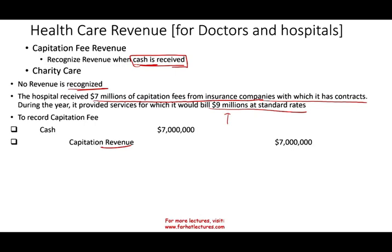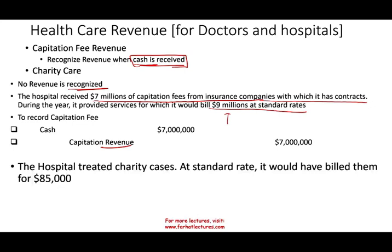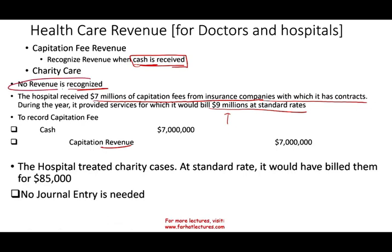The hospital also treated charity cases that would have been billed $85,000 at standard rates, but they don't expect to collect anything from those patients. What journal entry do we make? No journal entry — no revenue is recognized. If you don't think you're going to get paid, don't record the revenue then take it out. Right from the start, no revenue is recognized for charity care.